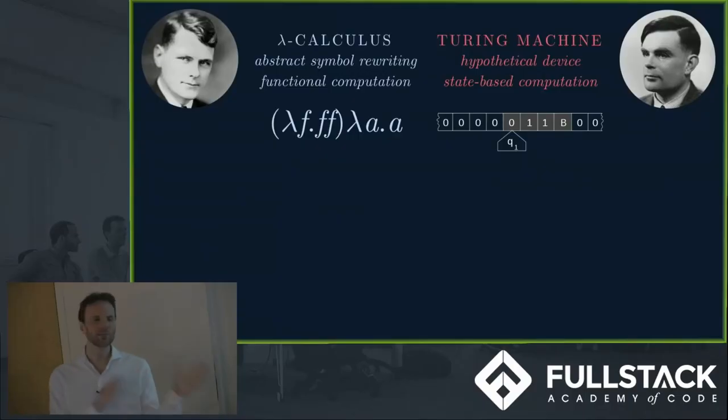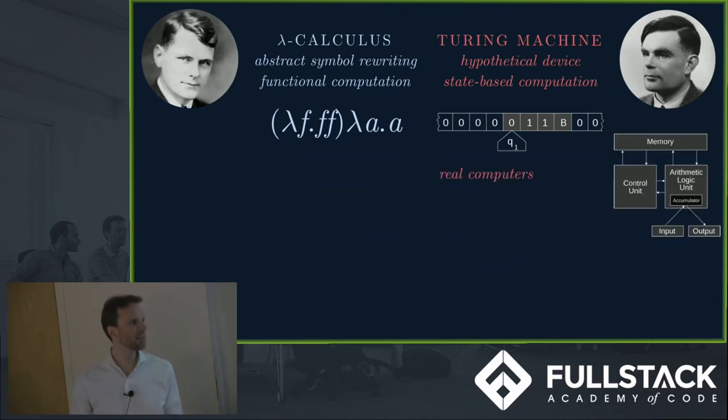Lambda Calculus and Turing machines are equivalent. Anything one can calculate, the other can calculate. But Turing machines are exciting because they're these hypothetical devices that use state. And from these hypothetical devices, people said, wait a second, we can build real machines that do this.